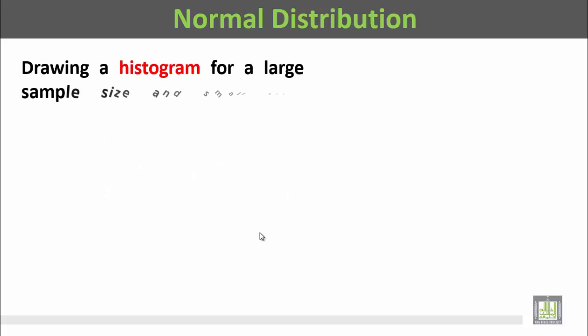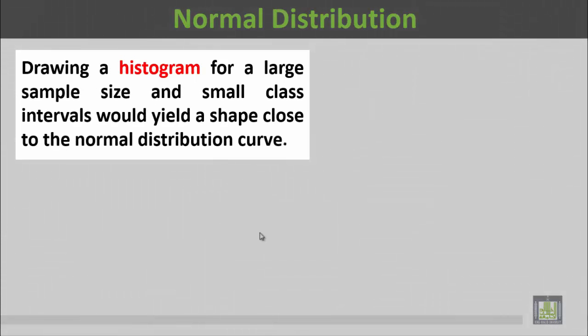and biochemical data. Drawing a histogram for a large sample size and small class intervals would yield a shape close to the normal distribution curve.